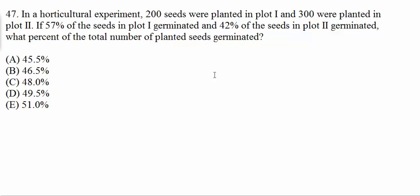So this question says in a horticultural experiment 200 seeds were planted in plot 1 and 300 were planted in plot 2. If 57% of the seeds in plot 1 germinated and 42% of the seeds in plot 2 germinated, what percent of the total number of planted seeds germinated?